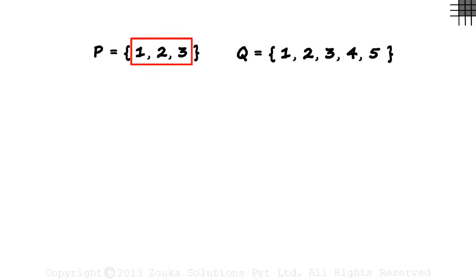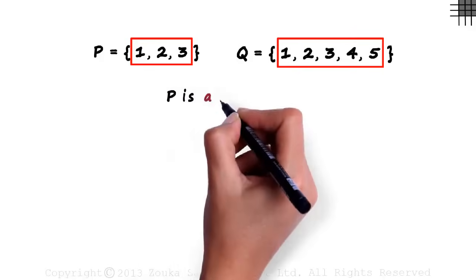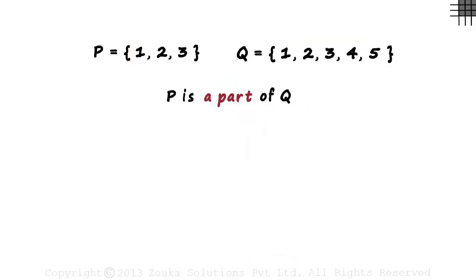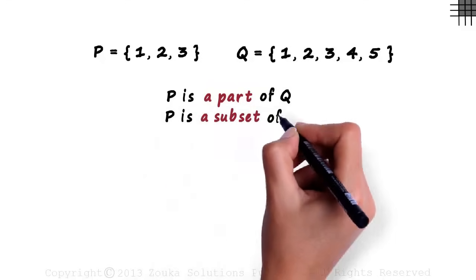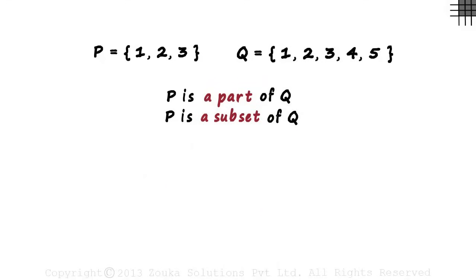This is a part of this. And that's why we say set P is a part of set Q. And we learnt in the previous video that part of also means subset. So we can say that set P is a subset of set Q. Do we have a symbol to represent this? Yes. It's written like this. P is a subset of Q.